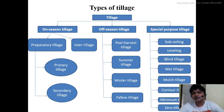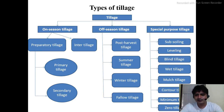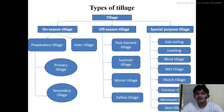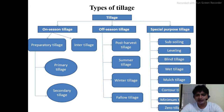Sometimes all these tillages might not be enough, and at critical periods we need to perform special operations like sub-soiling, leveling, blind tillage, wet tillage, mulch tillage, and contour tillage — these are forms of special purpose tillage. Minimum tillage and zero tillage are rather conceptualized as conservation tillage operations, which we will be discussing later in this class.